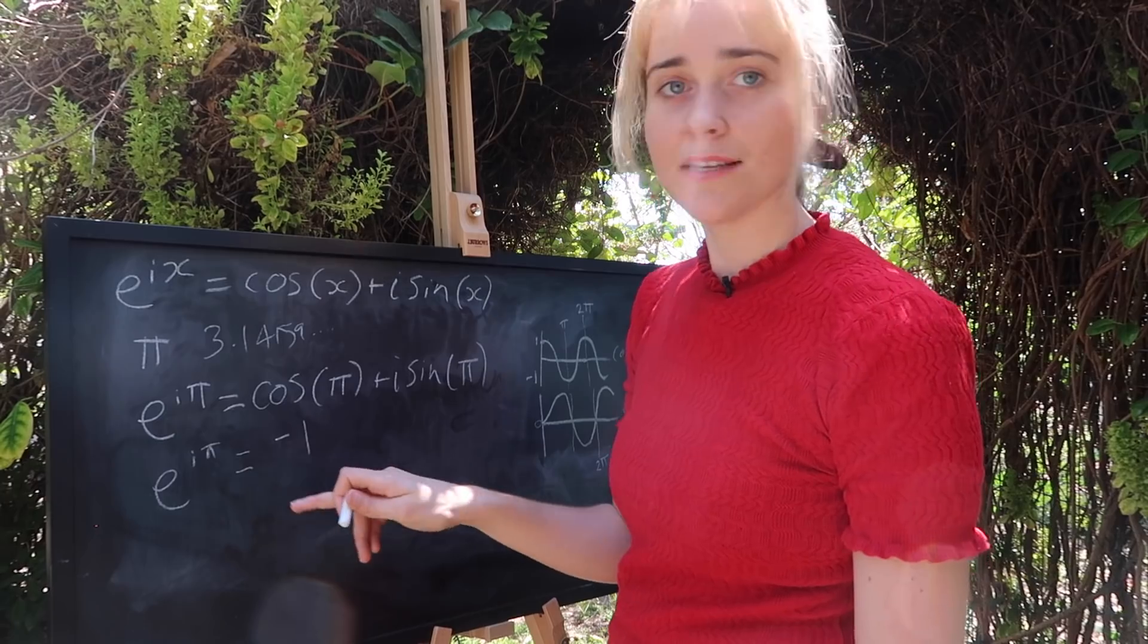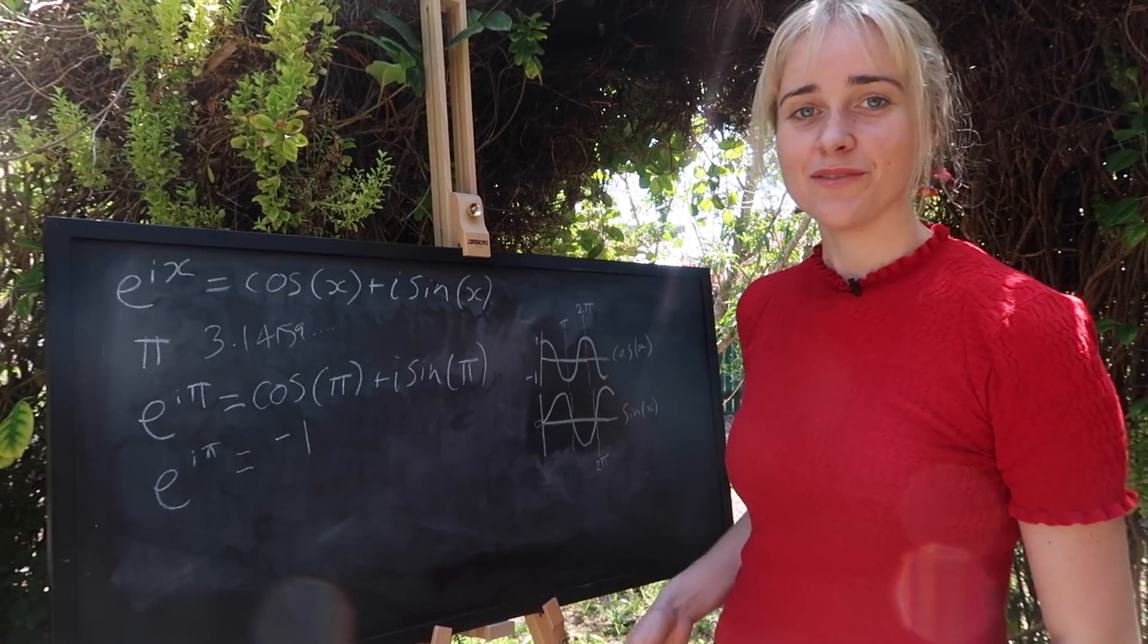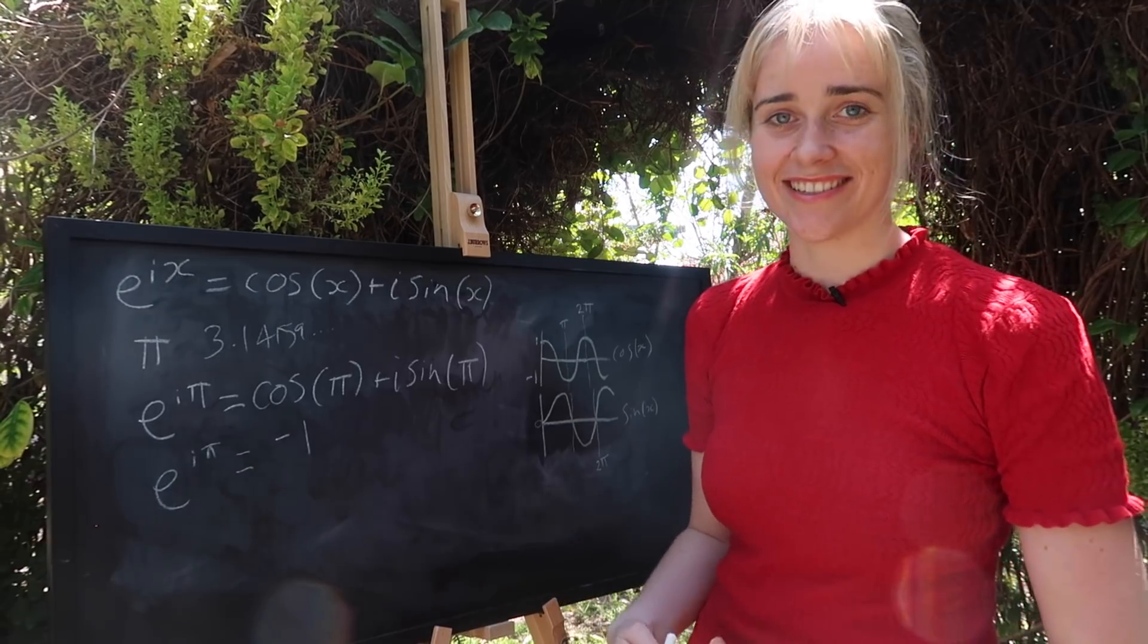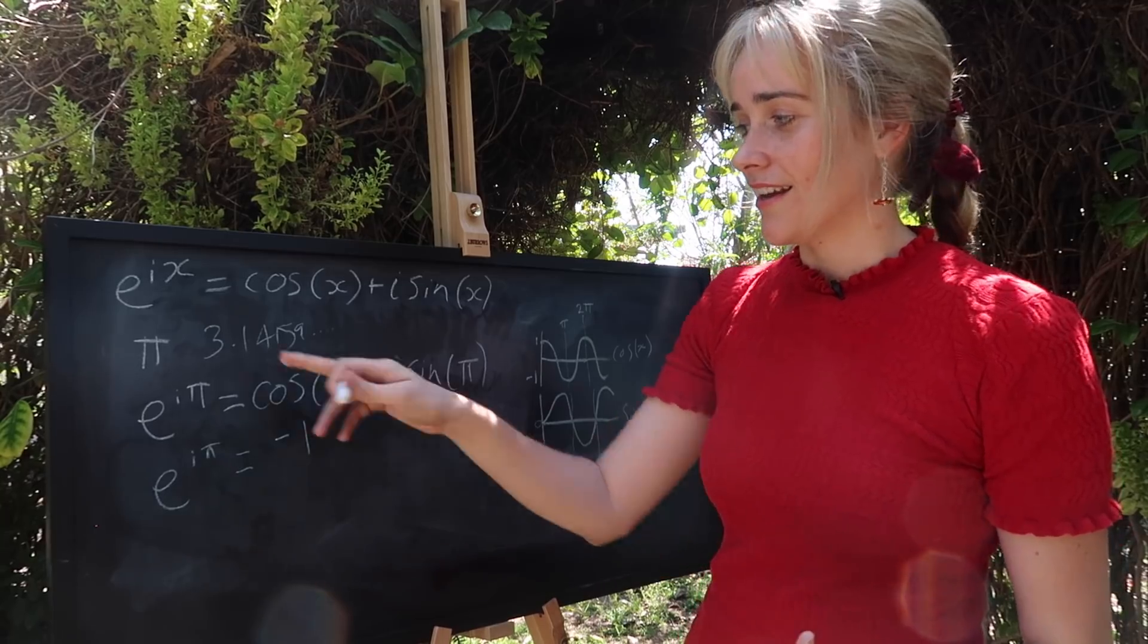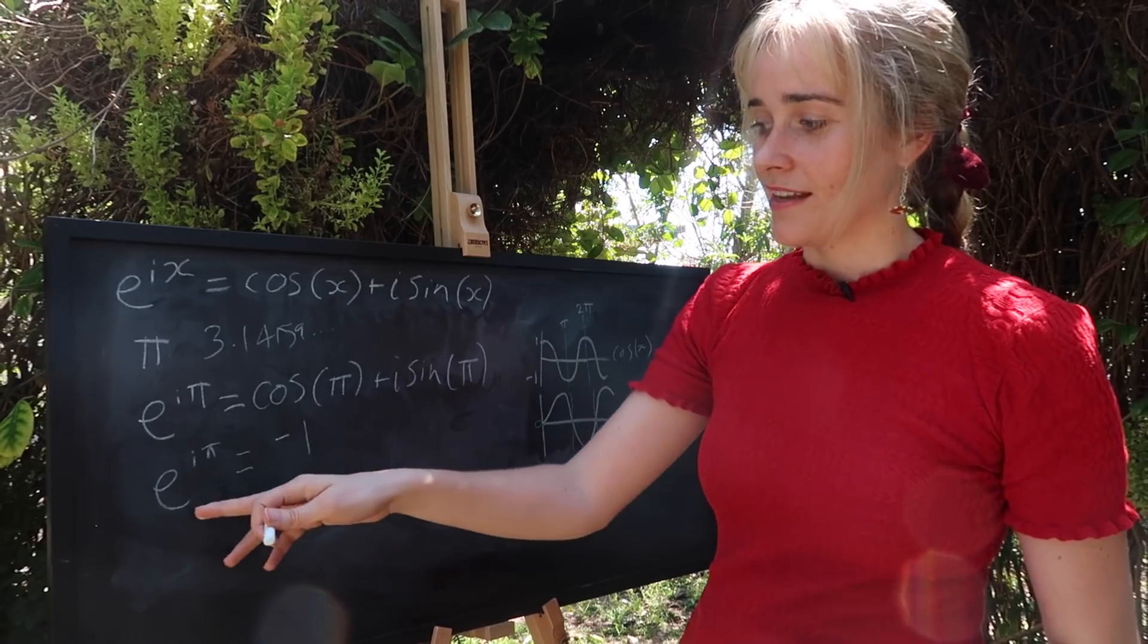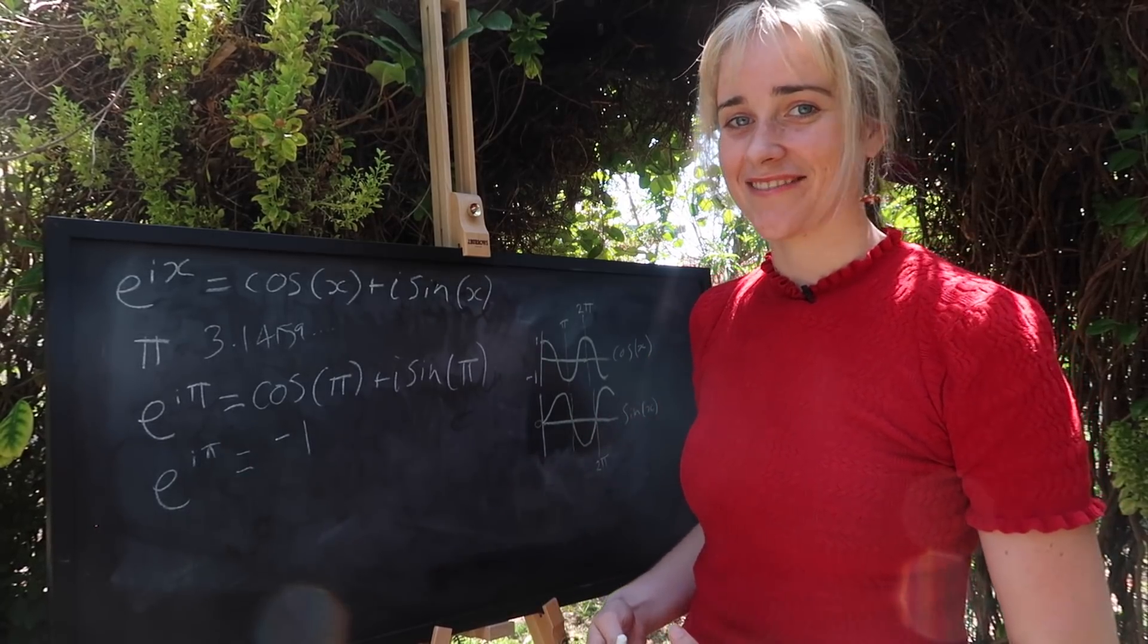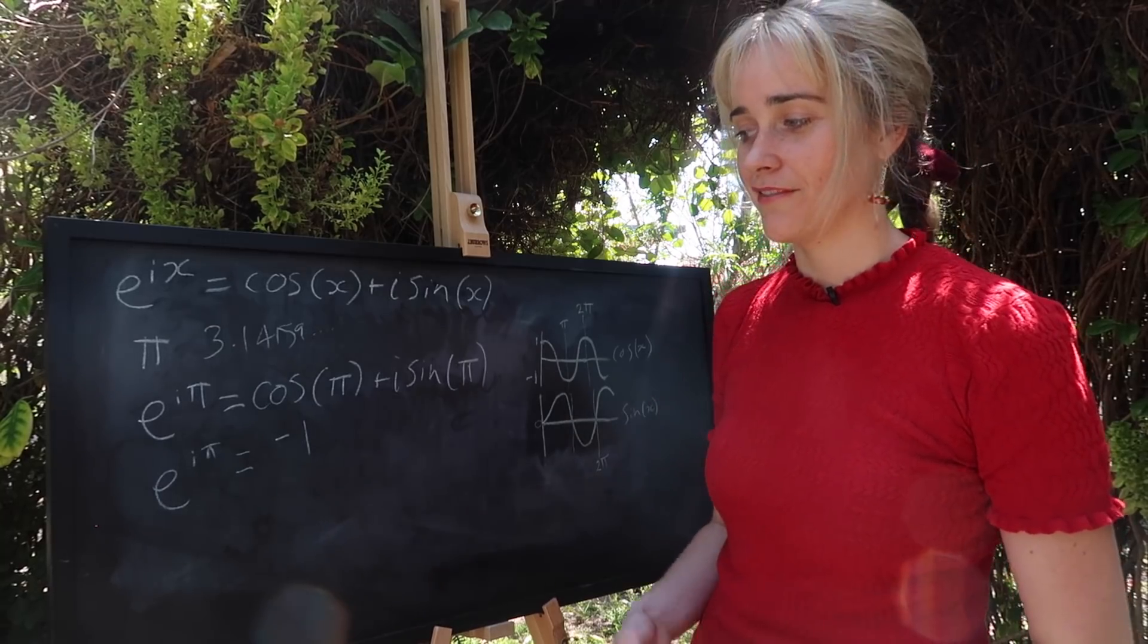e to the i pi is equal to minus one. Now I think that is a truly remarkable equation because not only does it have three distinct, beautiful and curious little constants or variables from mathematics, we have pi, our irrational number that doesn't end, e, a similar number to that, that relates to all sorts of things and crops up in nature all the time, and our i, our little imaginary friend who we asked for help, all equaling to quite the nice number of minus one.